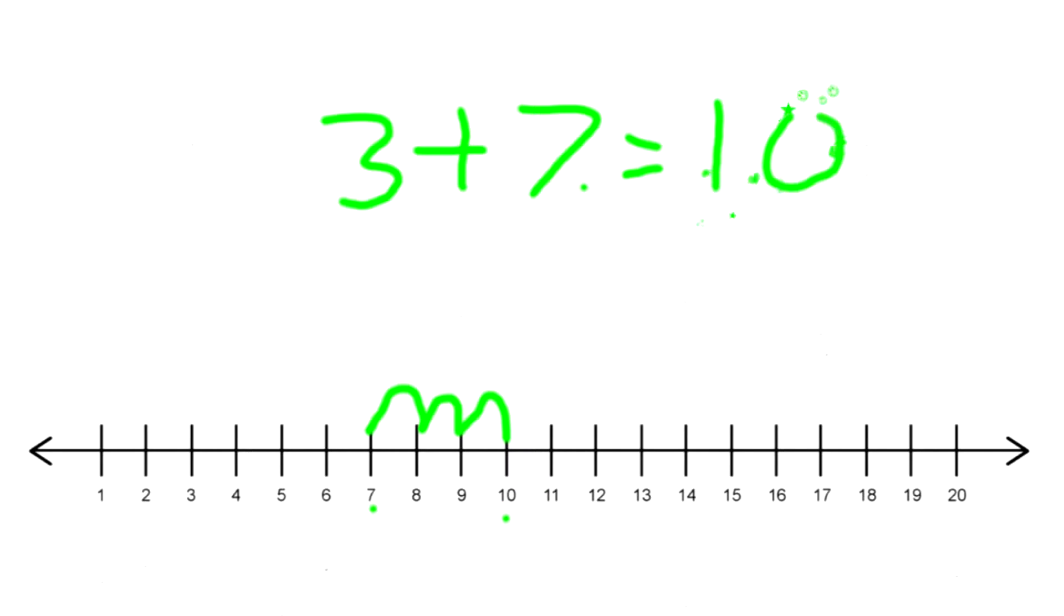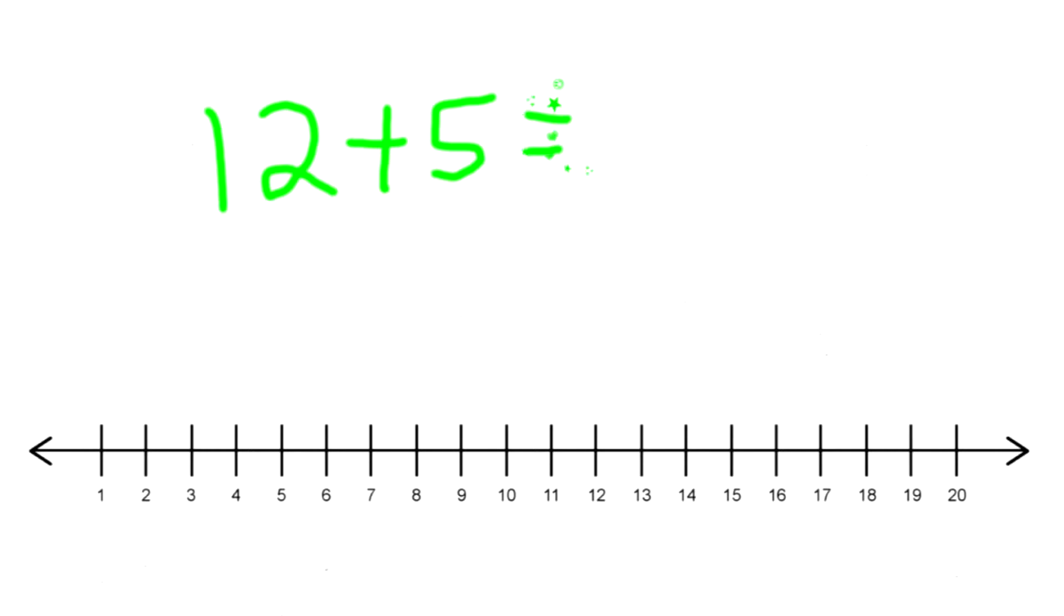Alright, you guys are becoming professionals at this. Let's try another number. Let's try the number 12 plus 5. Okay, first we find the biggest addend, biggest number, and that is, you're right, number 12. 12 is bigger than 5, so we're going to start on the number 12.